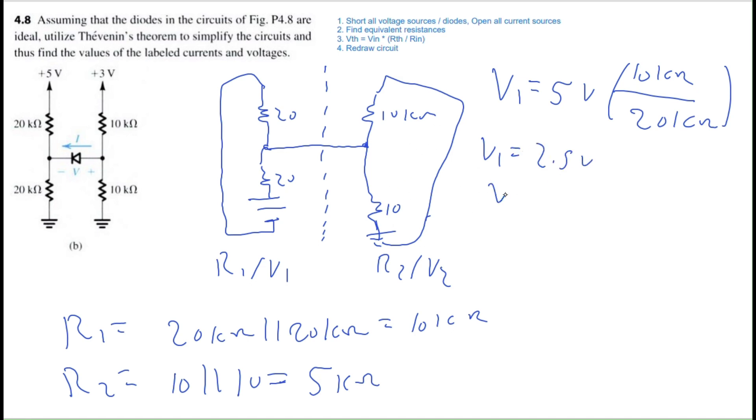And then V2 will be equal to the input voltage on the right side, which is 3 volts, multiplied by the Thevenin resistance R2, 5 kilo ohms, divided by the input resistance, which is 10 kilo ohms for this case. So V2 is 1.5 volts.